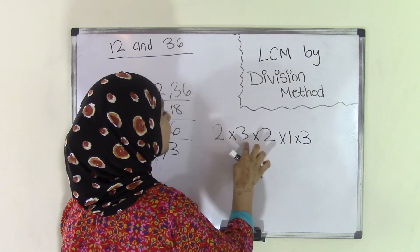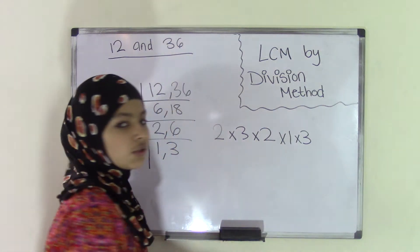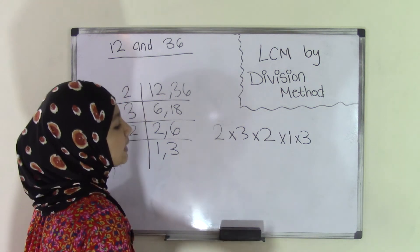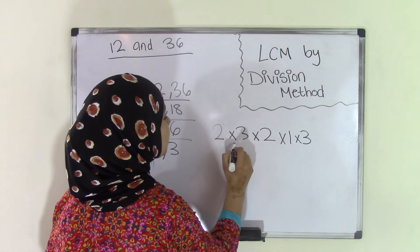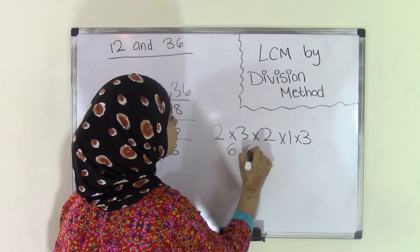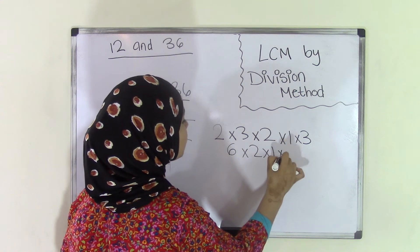So 2 times 3 times 2 times 1 times 3. This is just simple multiplication. Taking it step by step: 2 times 3 is 6, times 2 times 1 times 3. 6 times 2 is 12, times 1 times 3.